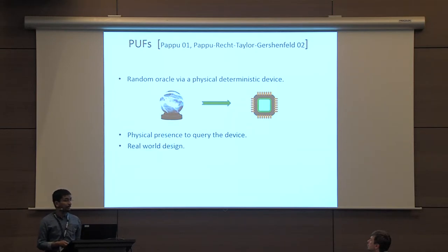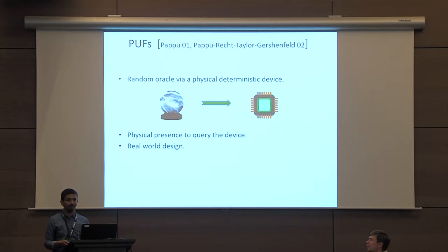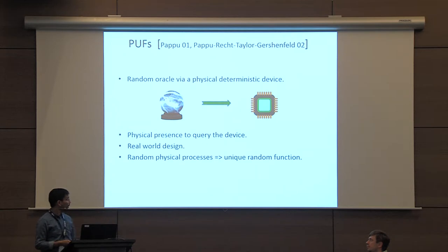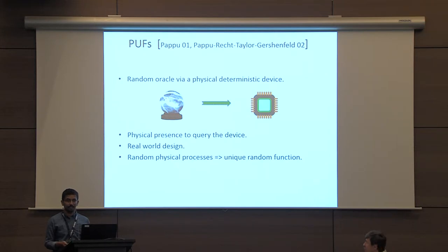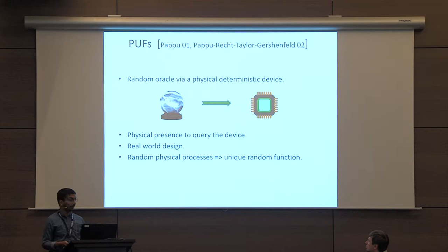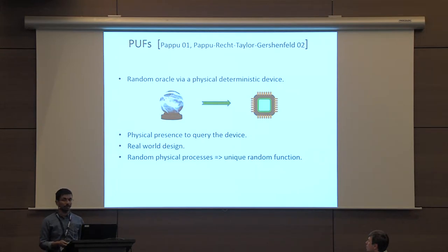There have been several implementations of a PUF, with designers trying to design more and more efficient PUFs inside smaller chips. At a very high level, PUFs use a random physical process, and this results in a unique random function. If you take two different PUFs, the random function embedded inside each of them is completely different.